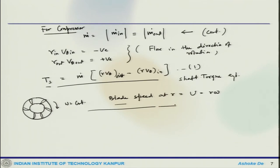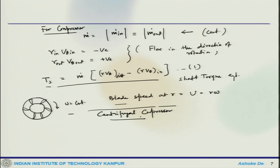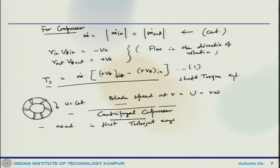Even in the compressor, we will first do a discussion on the centrifugal compressor. There is a brief history of the centrifugal compressor. This is probably the first turbojet engine — when we talked about the history, the first turbojet engine actually used a centrifugal compressor. So the centrifugal compressor was used in the first turbojet engine.